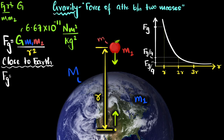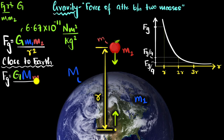The force of gravity would be G times mass of the Earth times the mass of the small object, divided by the distance from the center of the Earth all the way to that particular object. But if that object is very close to Earth, that distance is pretty much going to be the radius.